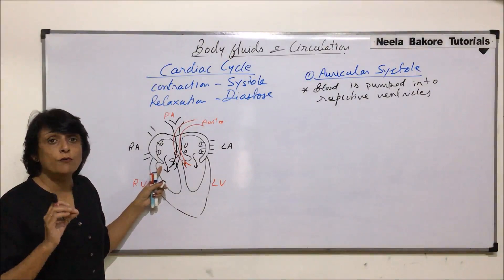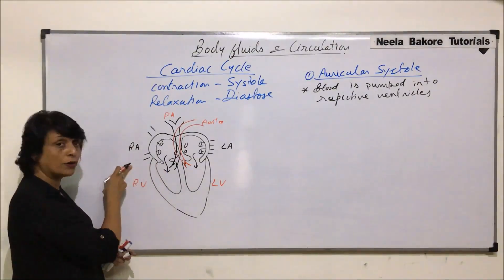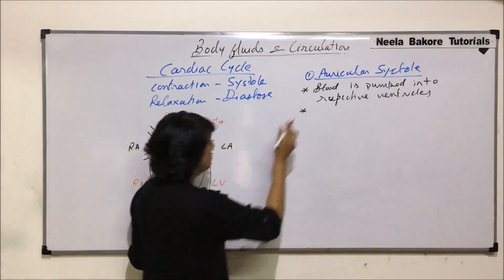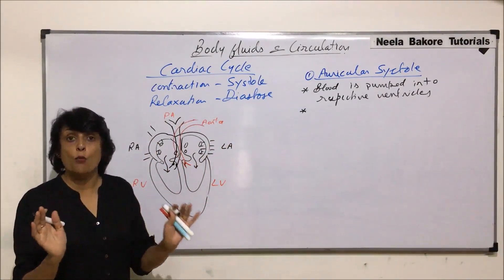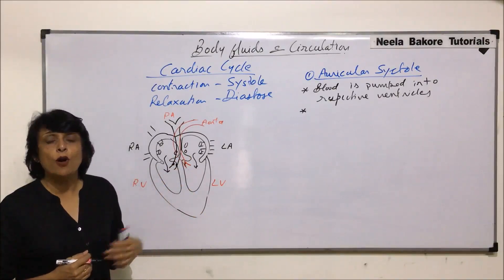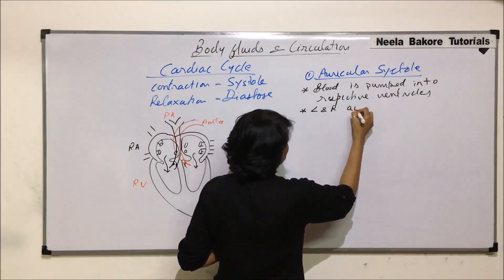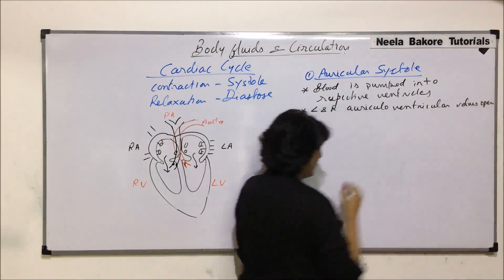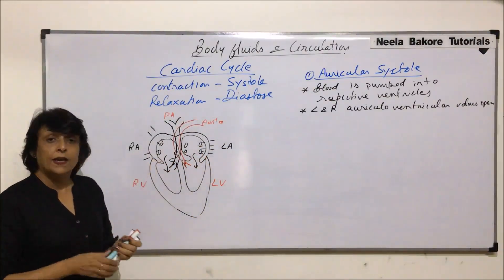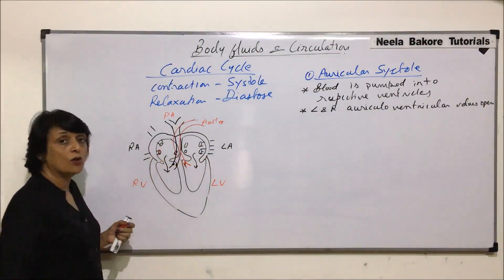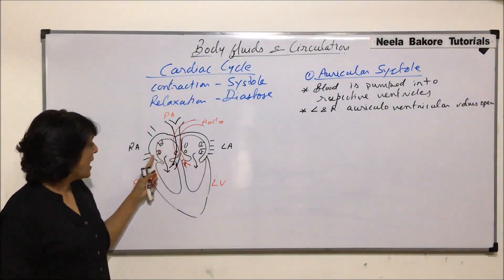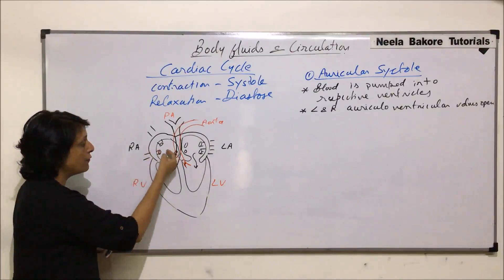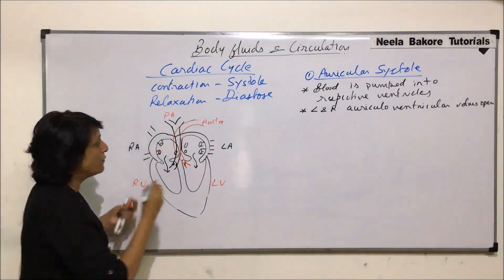We need to consider the auriculoventricular valves - the right auriculoventricular valve (tricuspid) and the left (bicuspid). During auricular systole, both left and right auriculoventricular valves are wide open so that blood from the auricles can be pumped into the ventricles. The valves of the inferior vena cava (Eustachian valve) and the coronary sinus (Thebesian valve) must be closed to prevent backward flow of blood into these veins.